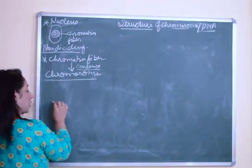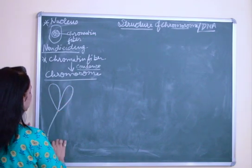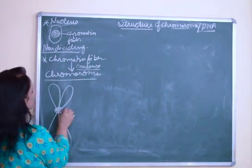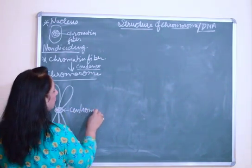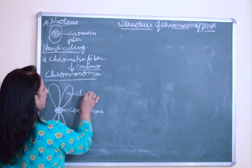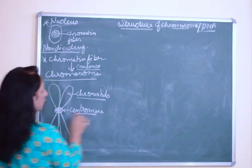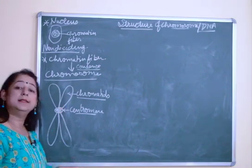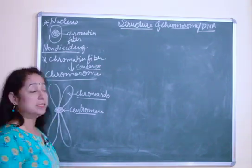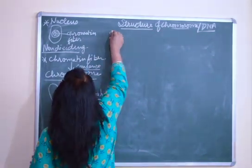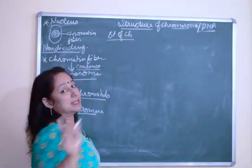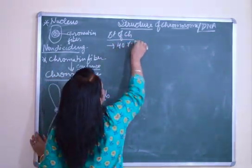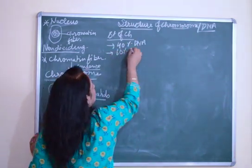If we see the structure of a chromosome, it is a structure which has two chromatids, and these chromatids are joined by a centrally placed centromere. So it has a centromere in the center which joins two chromatids. Now let us understand how this whole structure is formed and how this condensation happens. We must understand that the structure of chromosomes is made up of 40% DNA and 60% histone proteins.